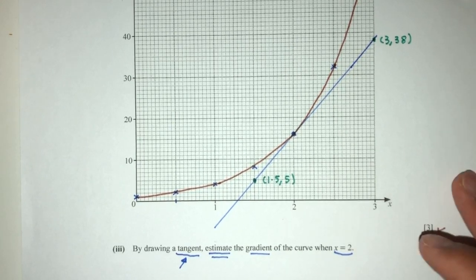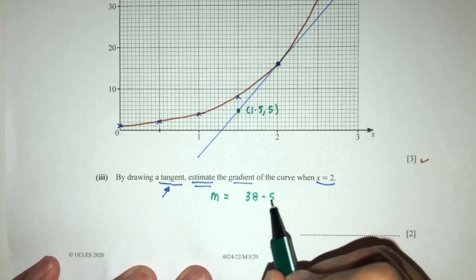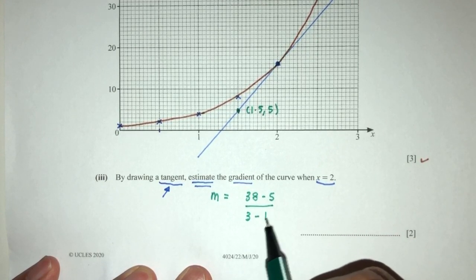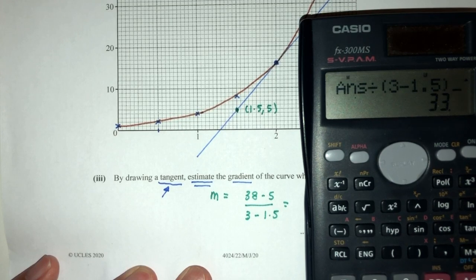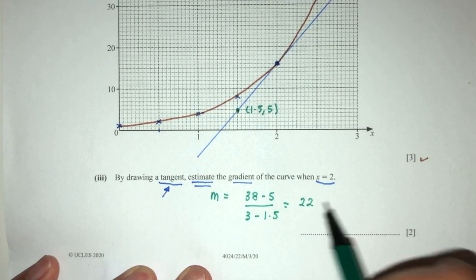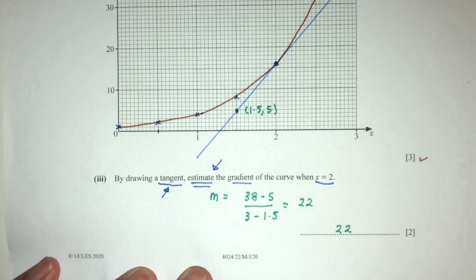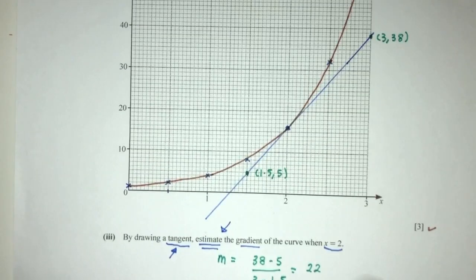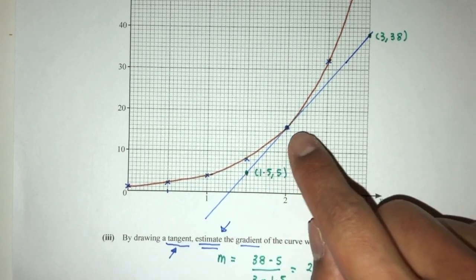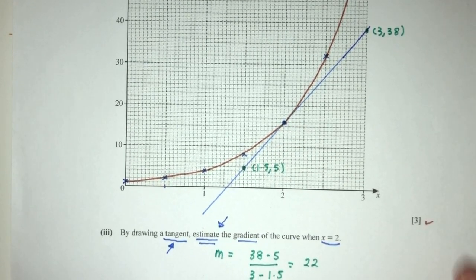To find gradient, we use the formula: gradient = (y2 - y1) / (x2 - x1). That gives us (38 - 5) / (3 - 1.5), which equals 22. So for me, the gradient is approximately 22. It is only an estimate — it is not an exact value. In the marking schemes, there will be a margin of error or a range of answers they will accept. It all depends on how well you draw the tangent. That is part 3 — easy 2 marks.